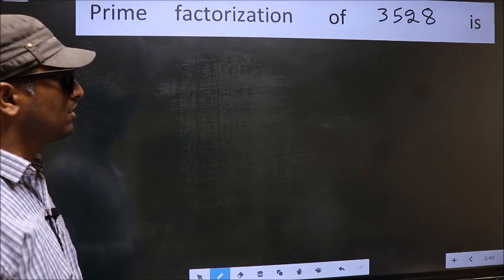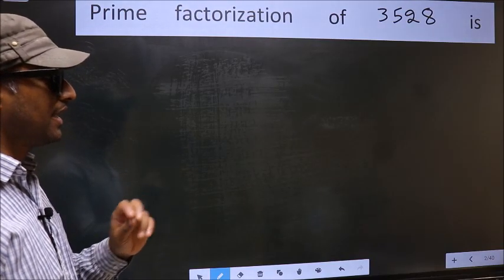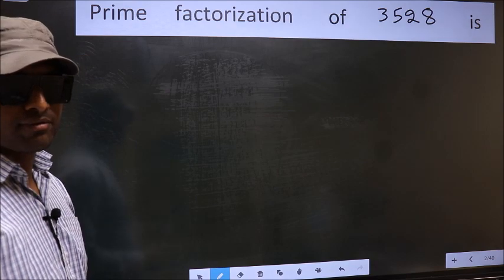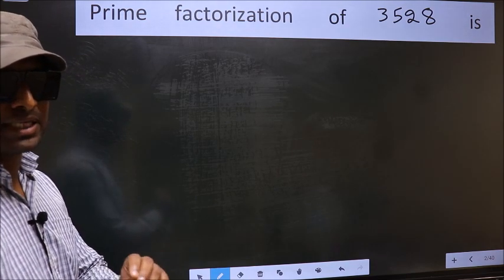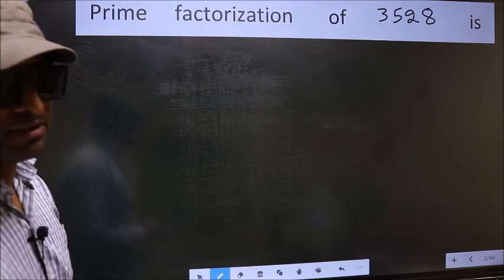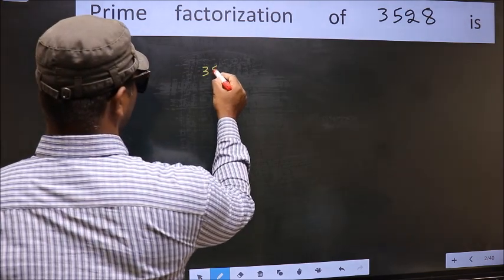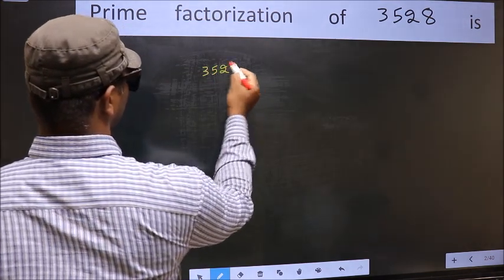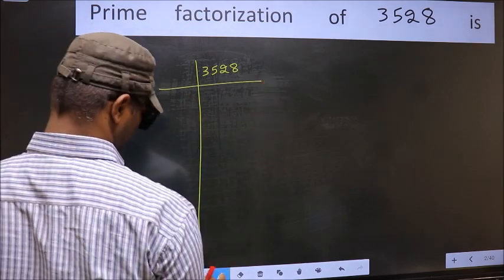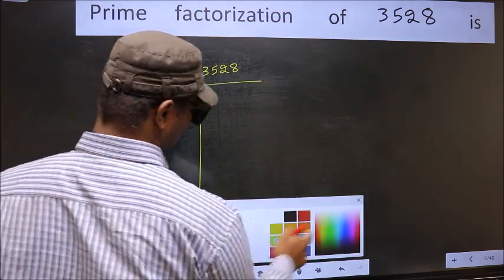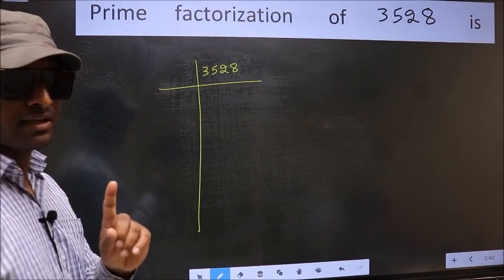Prime factorization of 3528. To do prime factorization, first we should frame it in this way. 3528. This is your step 1.